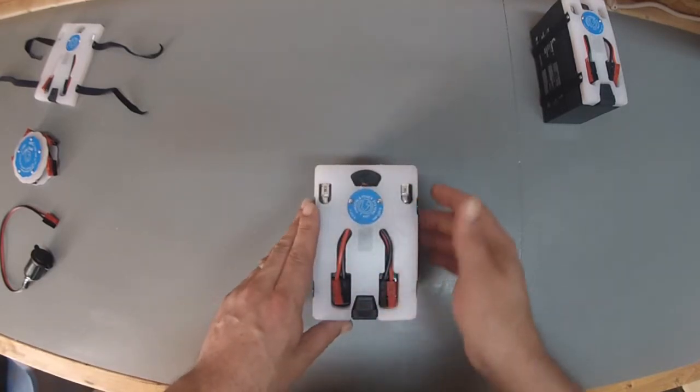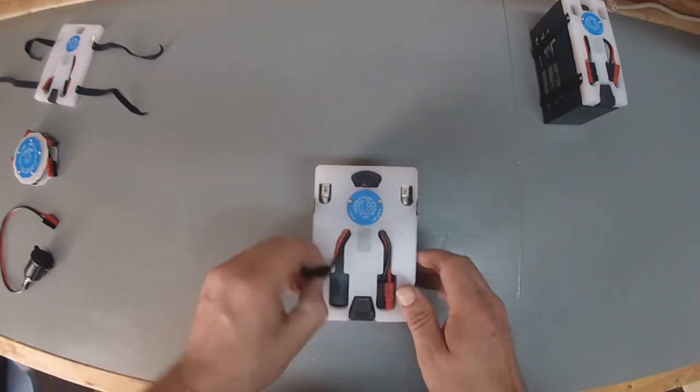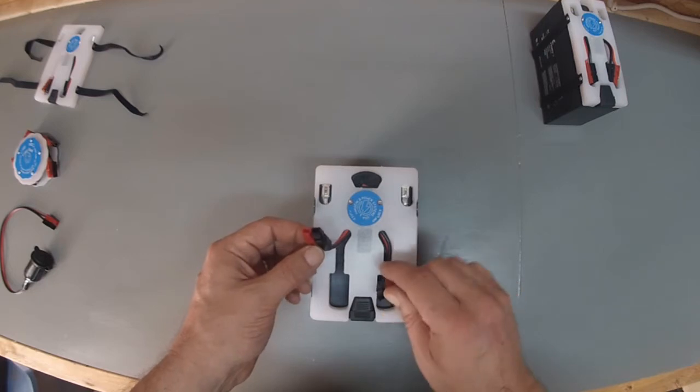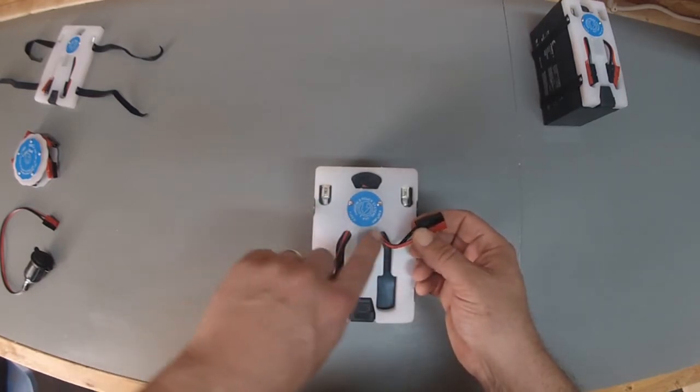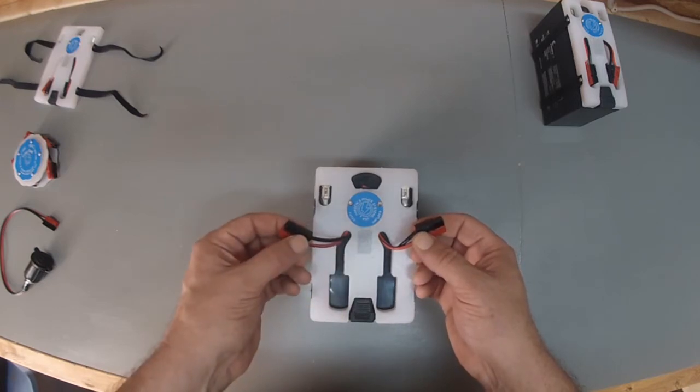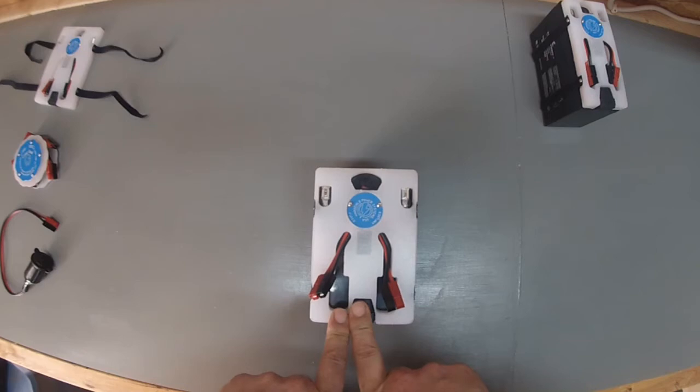Once it's connected though, you've got nice, clean, secure Anderson connections. One of them is fused, one of them is not. And you can see the plate here, it says fused or unfused. And you've got an inline blade type fuse.